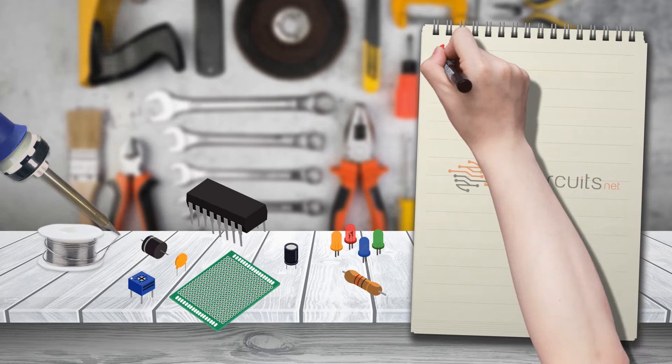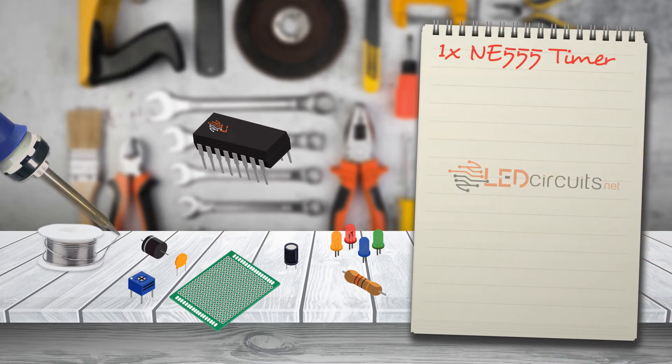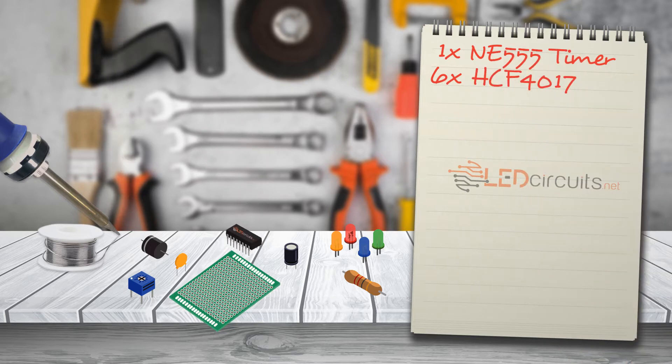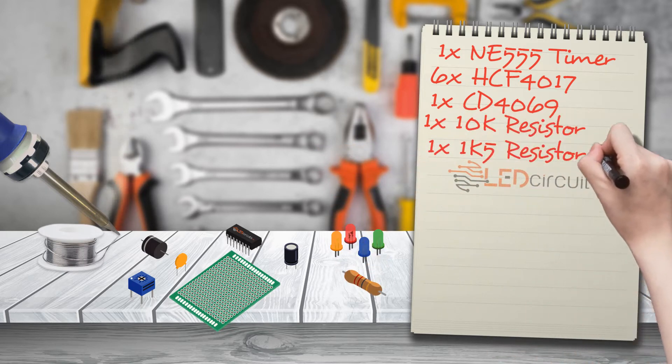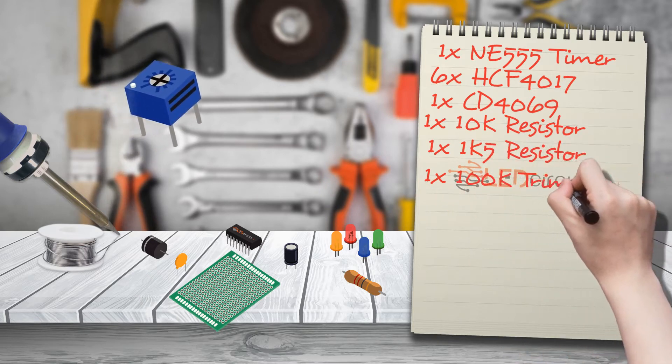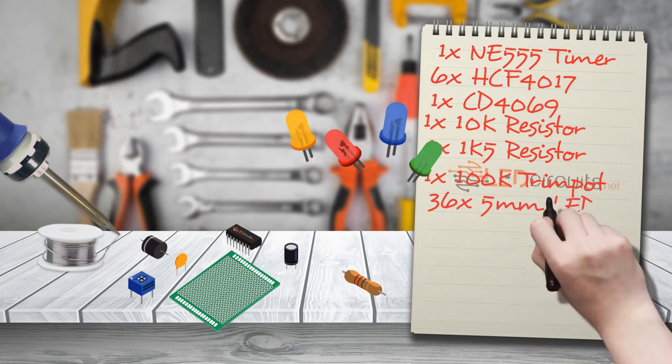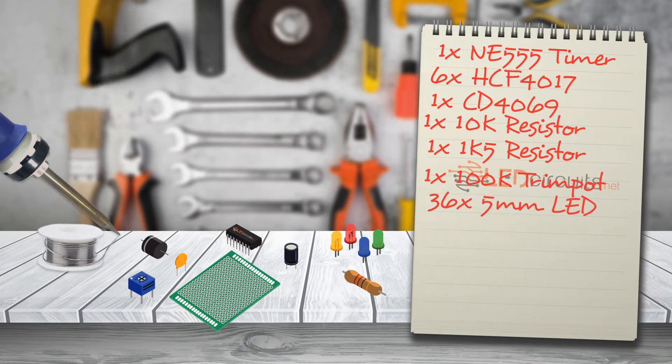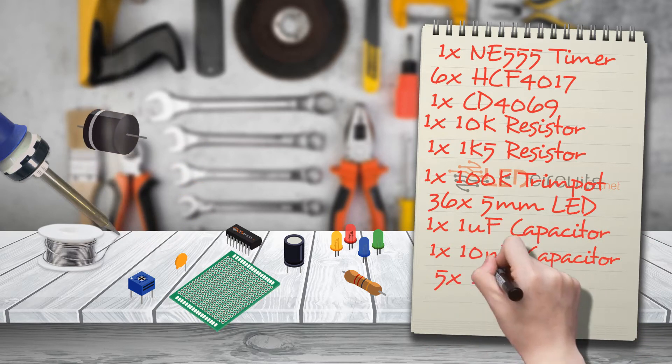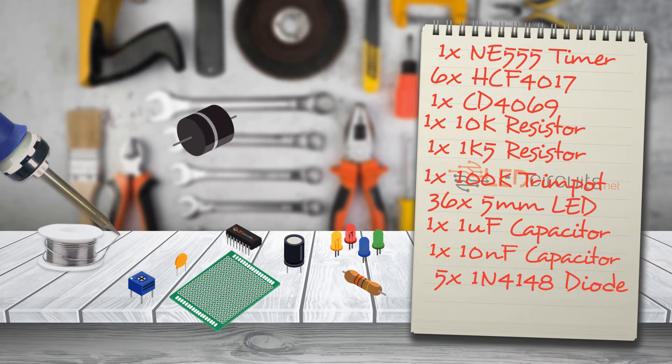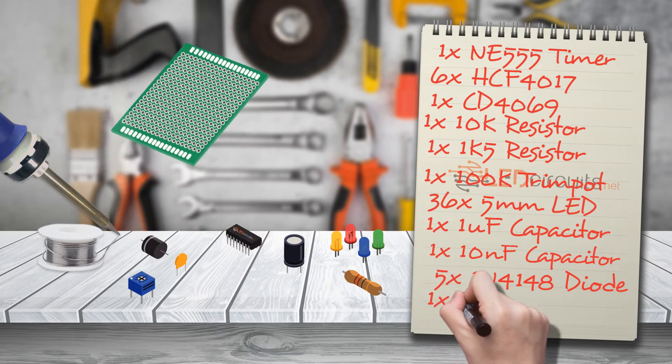Materials we will use: one piece NE555 timer, six pieces HCF4017 decade counter, one piece CD4069 hex inverter, one piece 10 kilo ohm resistor, one piece 1.5 kilo ohm resistor, one piece 100 kilo ohm trim pot, 36 pieces 5 millimeter LEDs, one piece 1 microfarad 16 volts capacitor, one piece 10 nanofarad ceramic capacitor, five pieces 1N4148 diode, and one piece 5 to 10 centimeters PCB board.